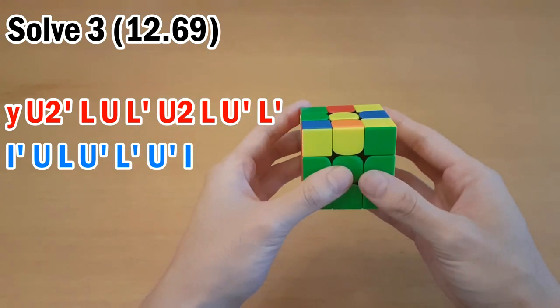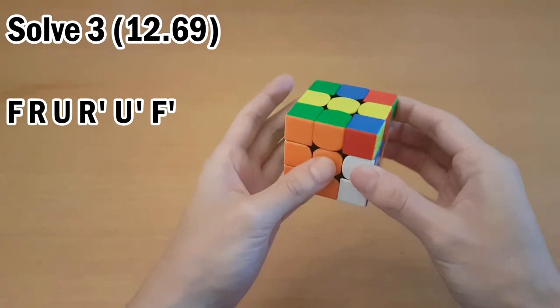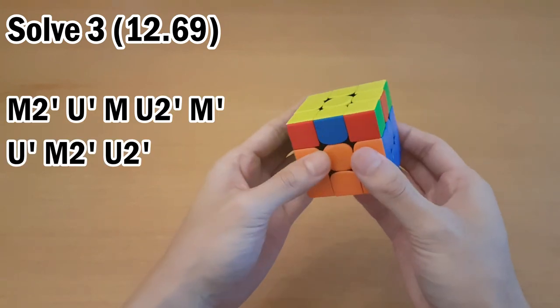Then for OLL, pretty simple. F, sexy move, F', and then PLL, also very good.